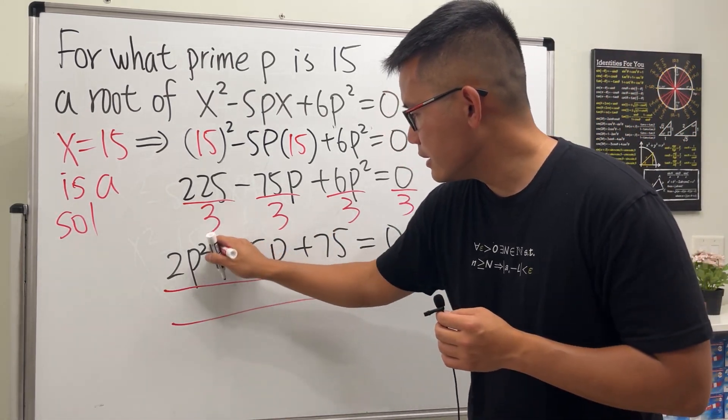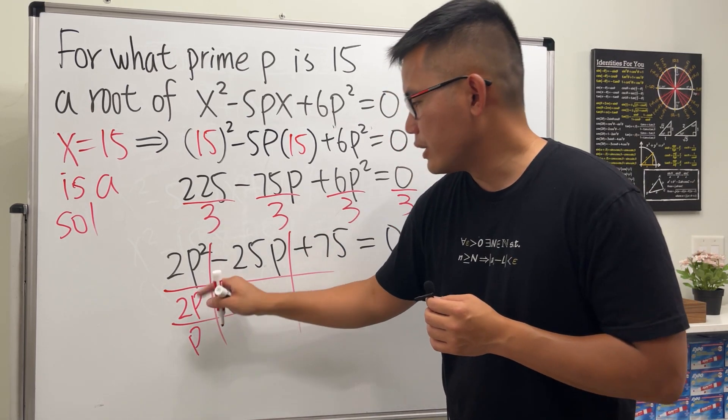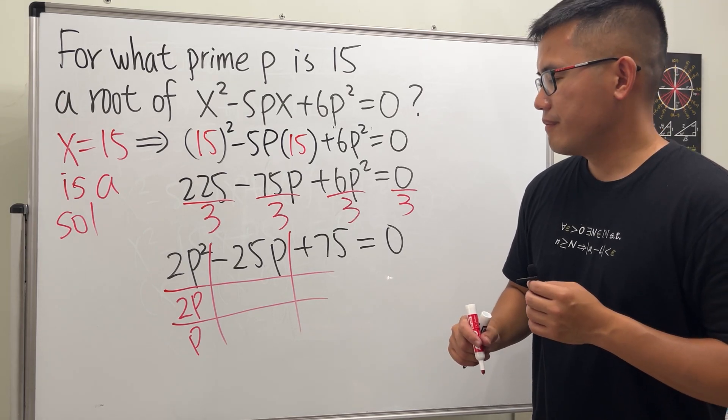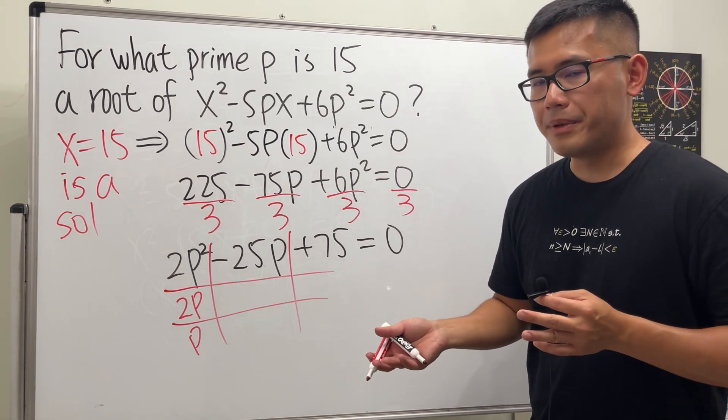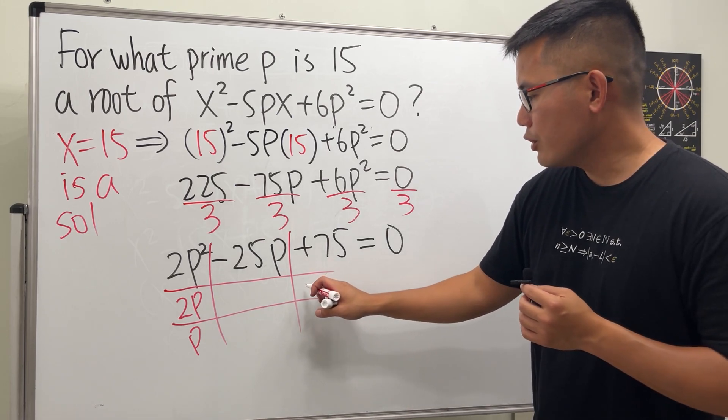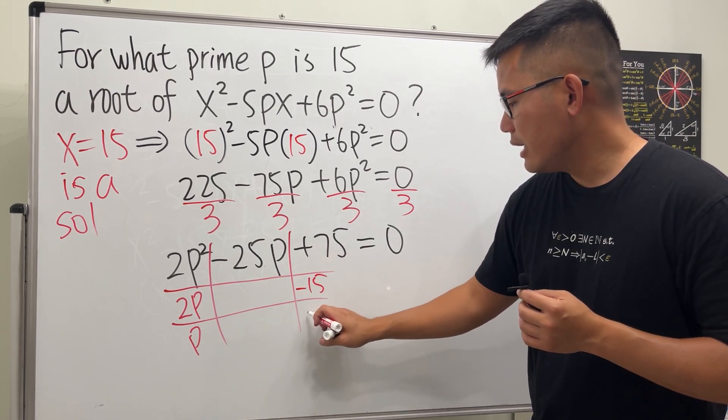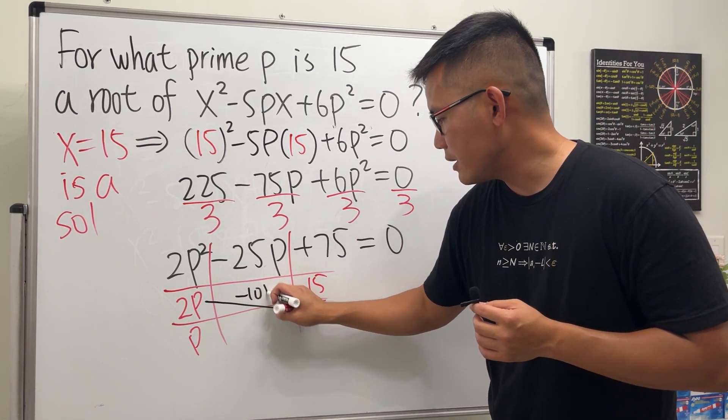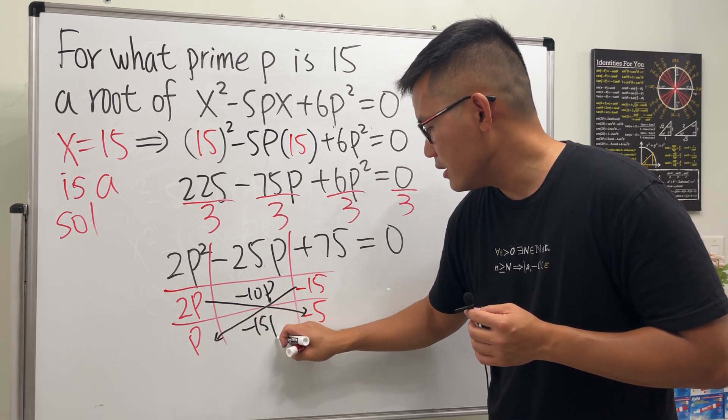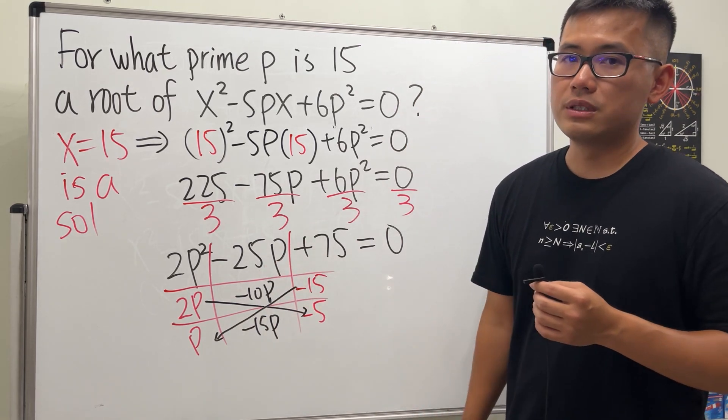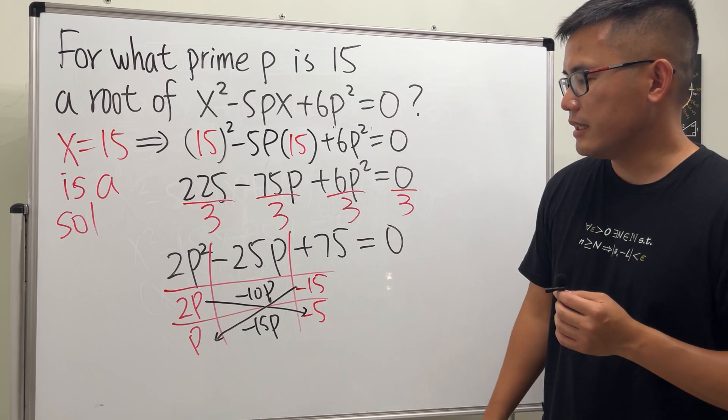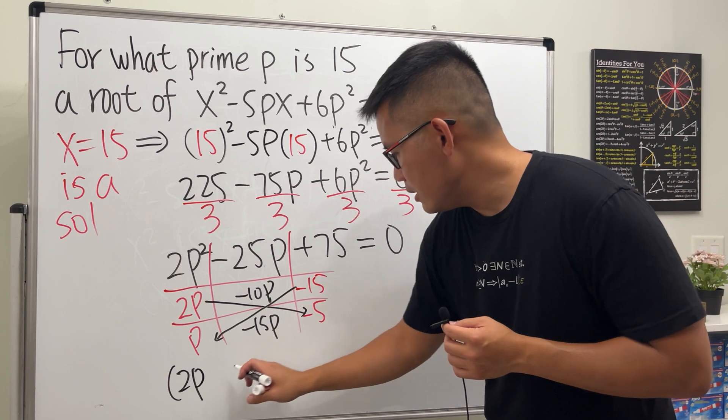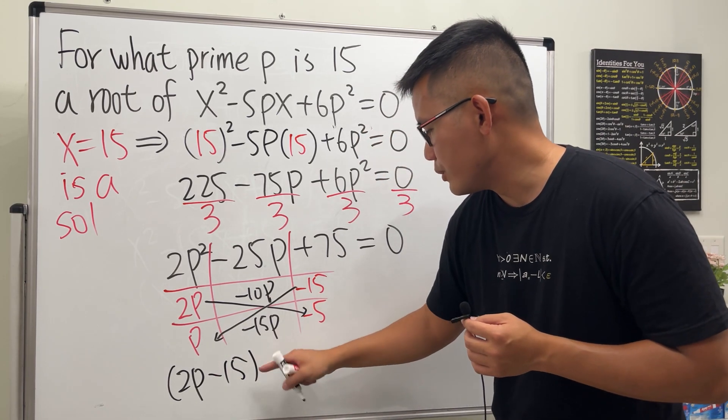Now factor this with the tic-tac-toe method. We need 2P times P to get 2P², and then to get 75 let's use 15 and 5, both of them being negative. I'm going to put down -15 here and -5 here because this times this gives us -10P, and then this gives us -15P. Together we do end up with the -25P. Excellent!